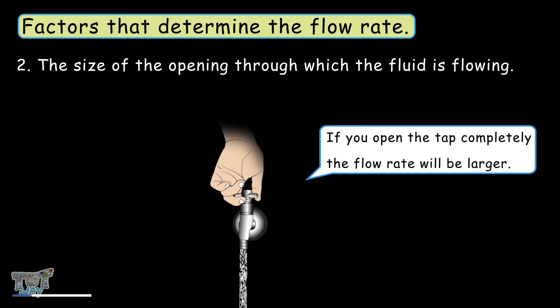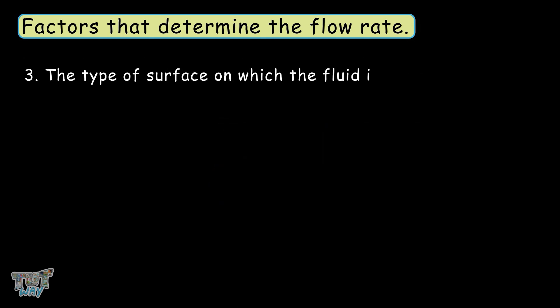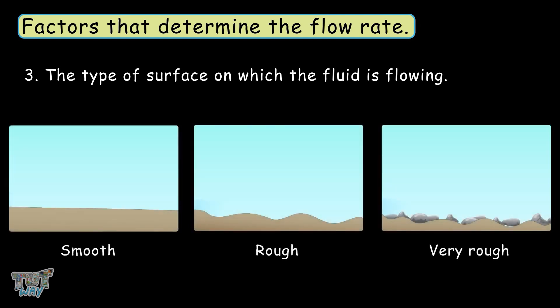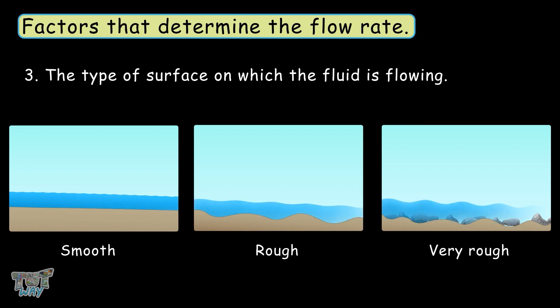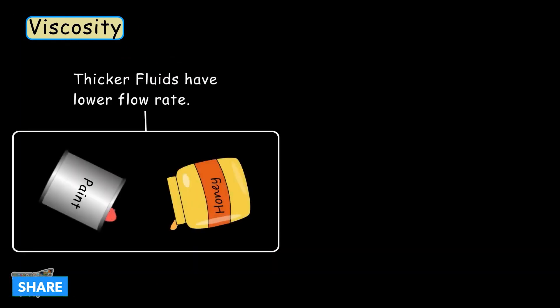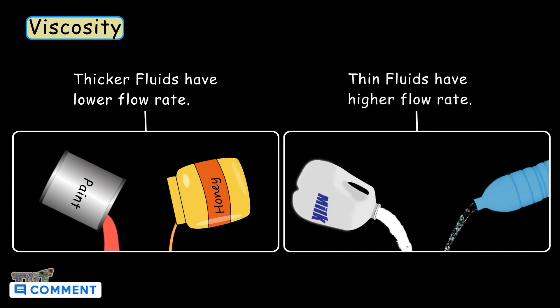Another factor that determines the flow rate is the type of surface on which the fluid is flowing. Take two or three types of surfaces, smooth to rough, and check the flow of the same liquid on all three types of surfaces. The fluid will flow fastest on the most smooth surface. The next characteristic of a fluid is viscosity, or the type of fluid — how thick or thin the fluid is. Thicker fluids like honey and paint will have a slower flow rate, whereas thin fluids like water, juice, and milk will have a higher flow rate. This is called viscosity.